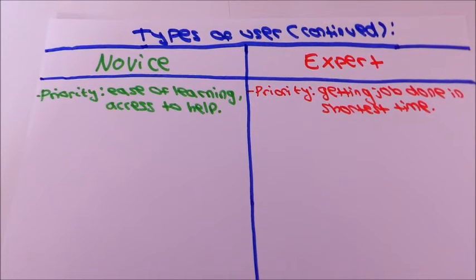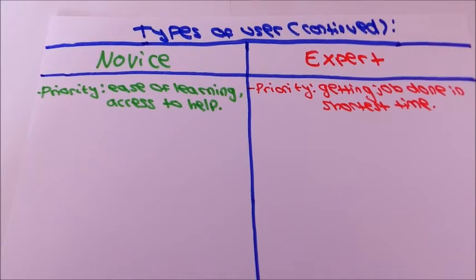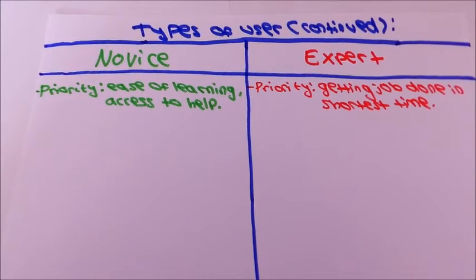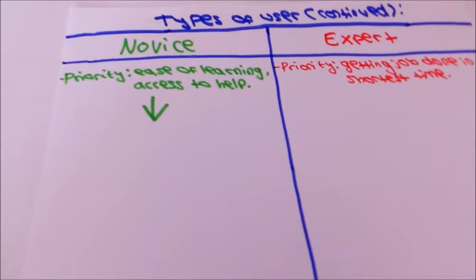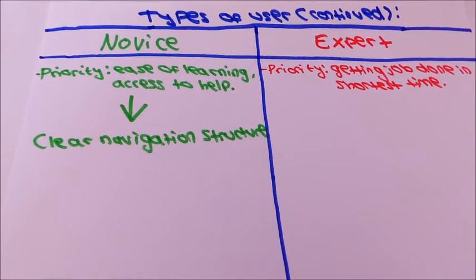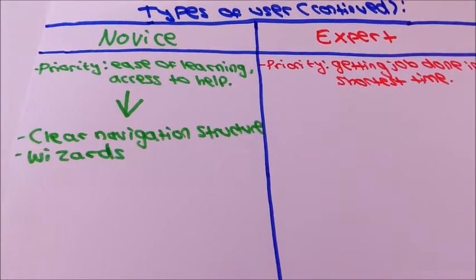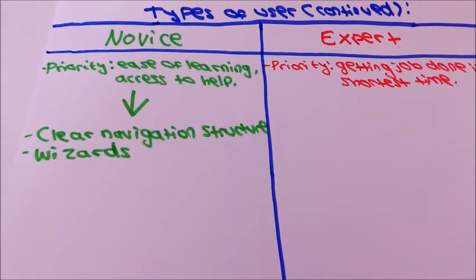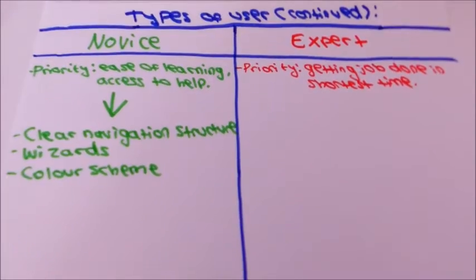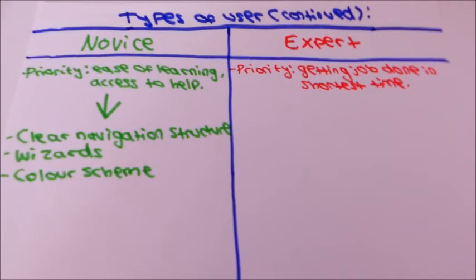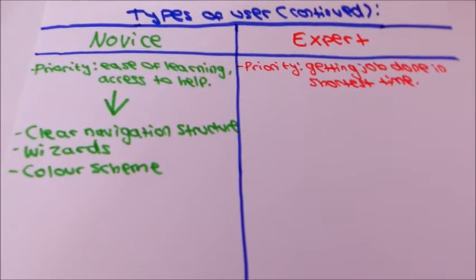Unlike the expert user where their priority is getting the job done in the shortest time possible. In order to fulfill the novice user's priority, you can use clear navigation structure, wizards to help guide the user through the system, and a color scheme which makes it easier for the user to use the system.